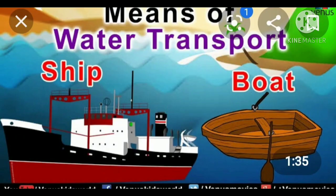Now, water transport — ships and boats. Not only ships and boats, but also sailboats, steamers, submarines, etc. are used for water transport. This carries people and goods across the rivers and seas, only in the water, not on the land. This is the second type of means of transport.